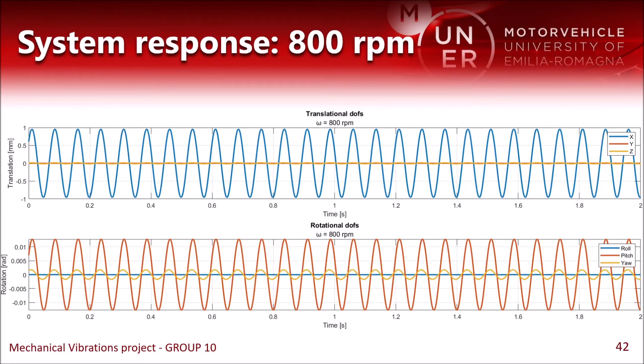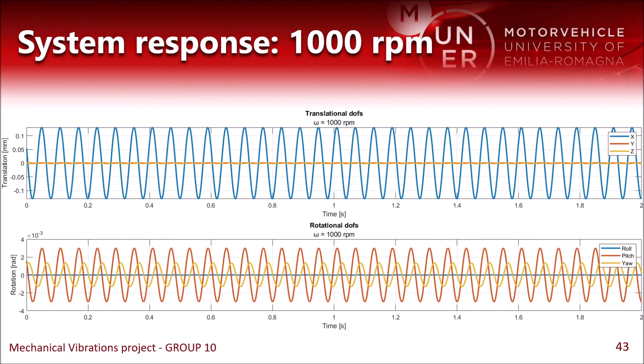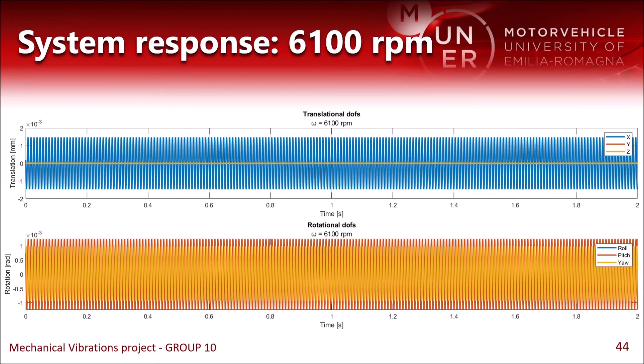Here we have the system response at 800 rpm. We measure a very low displacement. We have even lower displacements as we move further away from resonance, and almost negligible displacements and rotations as we move into what we call the seismic region.